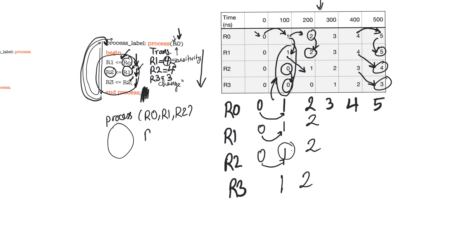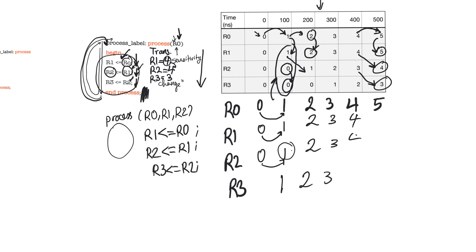When we had a fully populated sensitivity list, the code in the body of the process became combinational — the three statements become signal connections, causing the three signals to be shorted to each other. This gives us an idea of how we will use processes. We will use processes in one of two ways: either the sensitivity list is going to be deficient, like in the first example, or it's going to be complete, as in the second example. A process with a deficient sensitivity list will be used to declare registers. A process with a complete sensitivity list will be used to declare complicated combinational blocks, like state machines.